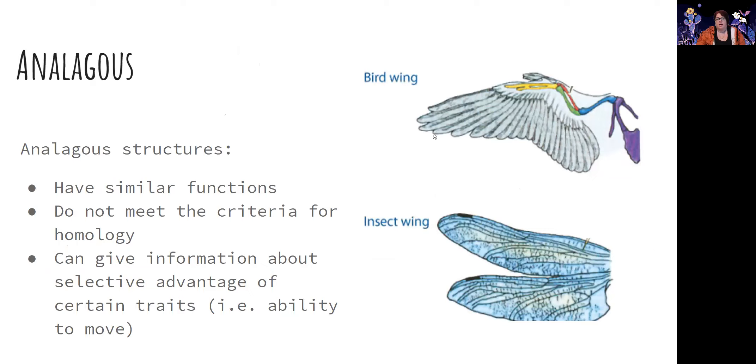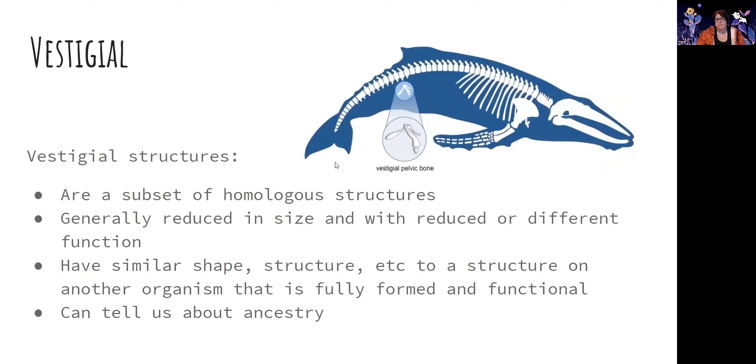Analogous structures, on the other hand, have similar functions, but they don't meet any of the other criteria for homology. They can tell us some interesting information about the advantage of certain traits like mobility. So for example, a bird wing and an insect wing would be analogous, because if you look at it here, bird wings are made of bone, so the material is different. They are different in relation to their proportions of the body, so we're starting to reject things that would make them homologous. The only thing we're left with is flight, which is very important, but only suggests analogous structures.